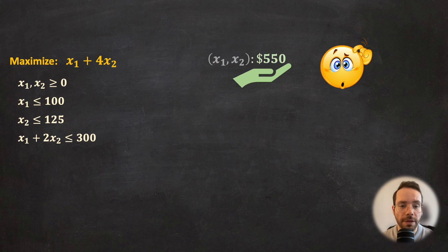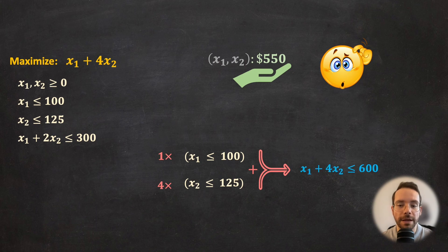For example, we could take x1 less than or equal to 100 and multiply both sides of this inequality by 1, and also take x2 less than or equal to 125 and multiply both sides of this inequality by 4. After multiplying and summing this up, we're going to have a new valid inequality that is going to tell us something useful. Based on this new inequality, it's impossible for the objective function to take a value larger than 600.